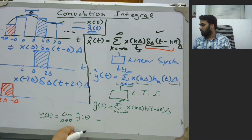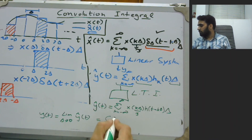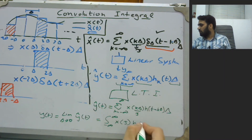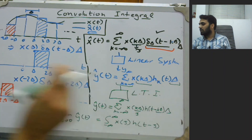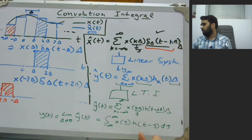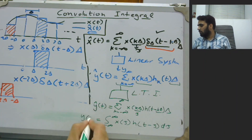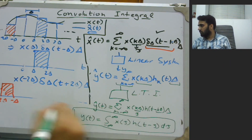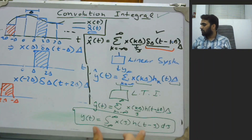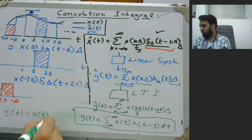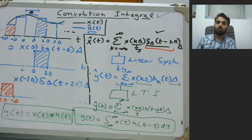So if Delta approaches zero, we can express k*Delta as tau, the summation changes to integration, and we get the integral from minus infinity to infinity of X(tau) times H(t minus tau) d-tau. This is a very well-known result which we call the convolution integral, and the shorthand notation is simply X(t) convolved with H(t). Let us understand this with the help of one example.